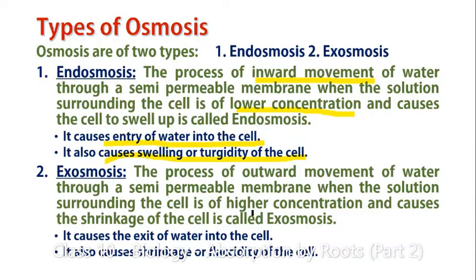In exosmosis, the opposite happens — it is the outward movement of water from inside the cell. In this case, the cell is surrounded by a higher concentration solution, meaning there is less water molecules outside. Inside the cell there is more water, so water from inside the cell moves out. This causes exit of water from the cell, resulting in shrinkage of the cell.